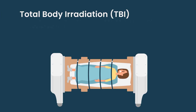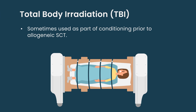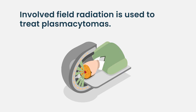Is total body irradiation used if there are multiple plasmacytomas? Total body irradiation, or TBI, is really reserved for conditioning for allogeneic transplants — where patients receive cells from a donor — and is not used as a treatment for plasmacytomas. Instead, we use involved field radiation, where the radiation oncologist targets the specific tumor with photons or sometimes protons to kill the cancer cells. If there are multiple active sites, we may need to target different spots depending on which are most active.